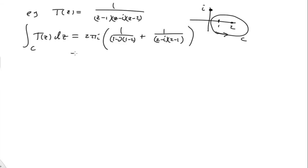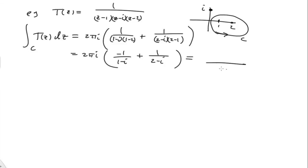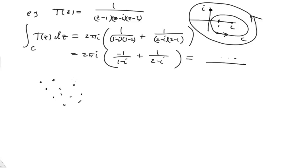So the result involves 2πi times [negative 1 over (1 minus i) plus 1 over (2 minus i)]. Clearly this is non-zero. In the next videos we'll talk about what happens when we enclose all of our singularities and how to compute those values efficiently. When you enclose all the singular values, there's a simplified way of computing using the residue theorem. We'll get to that in the next video. Thank you very much.